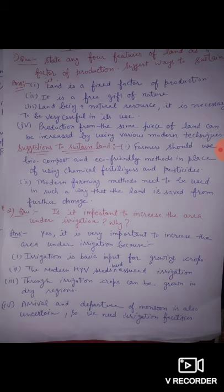Now, how can we sustain land? The first way is that farmers should use bio-compost and eco-friendly methods in place of chemical fertilizers and pesticides. The second way is that modern farming methods need to be used in such a way that the land is saved from further damage, since modern farming uses chemicals, fertilizers, and pesticides more heavily.